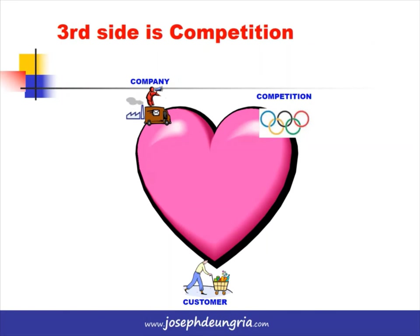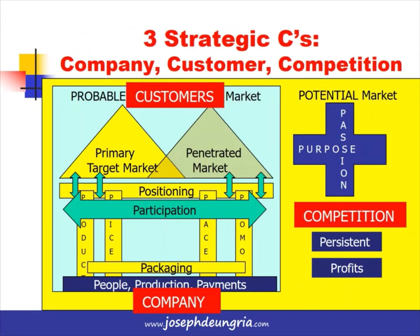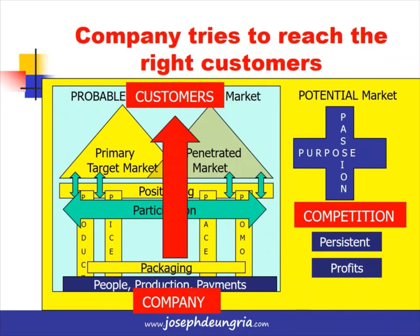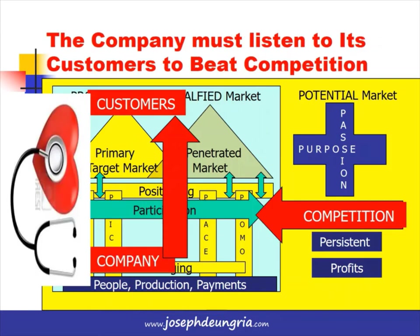For customers, we meet needs, wants, and demands. In the marketing stethoscope model, the company is at the bottom, customers are on top, and competition is on the left. What the company tries to do is reach the right customers, while competition wants to block the company's communication and profits. To be better than competition, the company must listen to its customers and react through its 4Ps, through participation, and through its overall business delivery.